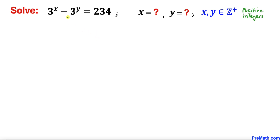In this video we are going to solve this given exponential equation: 3^x minus 3^y equals 234, and make sure that x and y are positive integers.